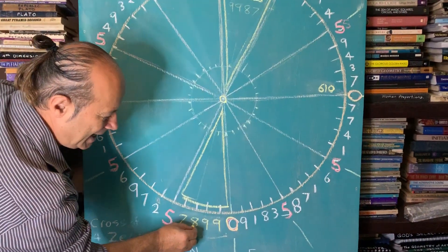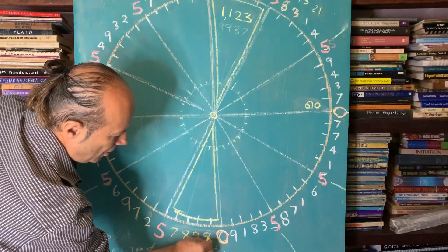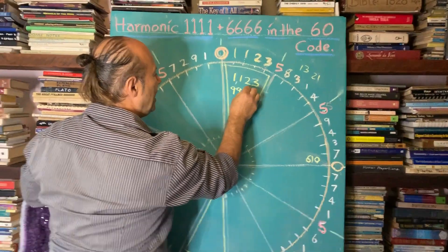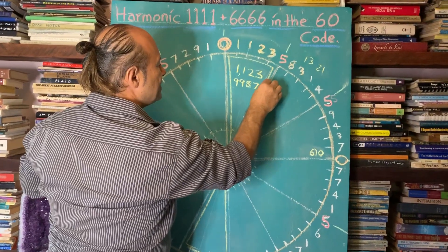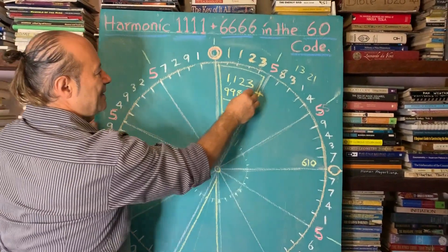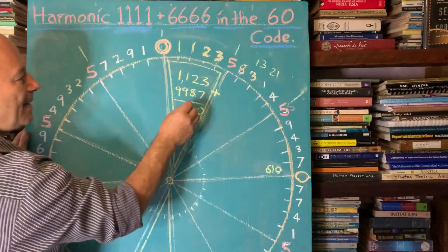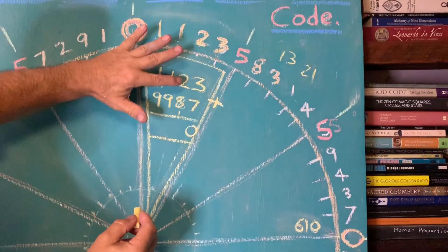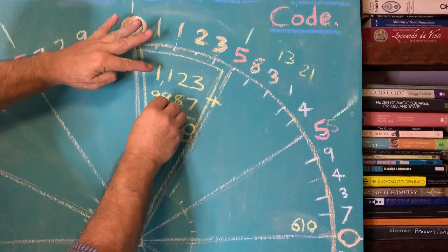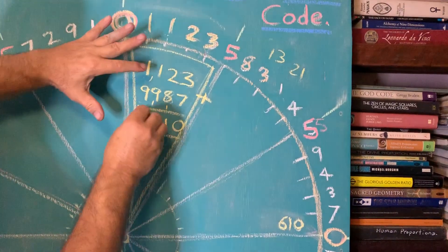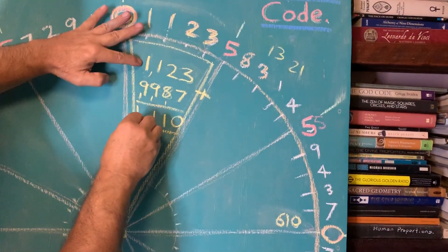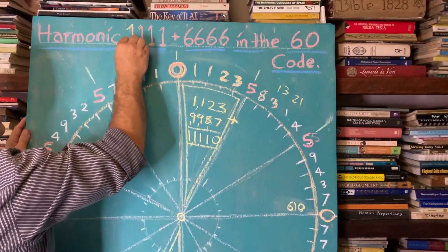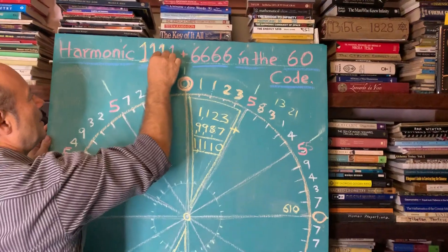Think of it as 9987 — I'm going to add 9987. These are the sum of two quad digits. 7 and 3 is 0; 8 and 2, 7 and 3 is 10, carry the 1; 1 and 8 is 9, plus the 2 is 1, carry the 1; 10 and 1 is 11, carry the 1; 10 and 1 is 11. So here we've got 11111, and that's why I've called it Harmonic 1111.